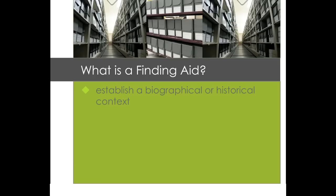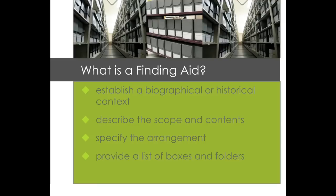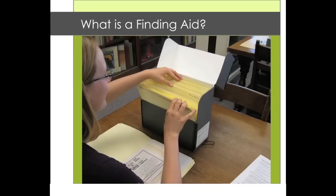Finding aids establish a biographical or historical context for the collection, describe the scope and contents of the collection, specify the arrangement of the collection, and provide a list of boxes and folders within the collection. By browsing these important tools, you can determine which parts of which collections you should look at for your research.